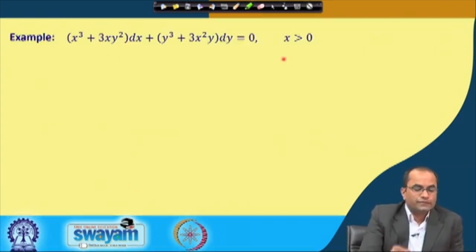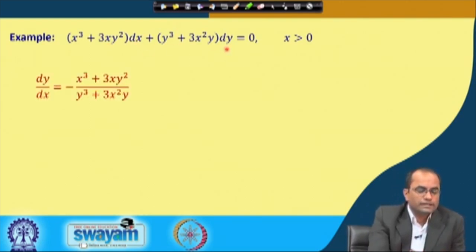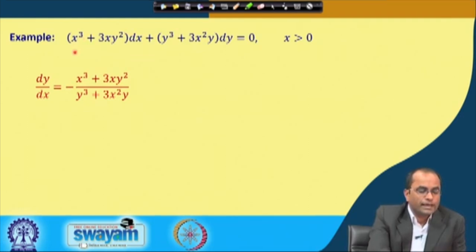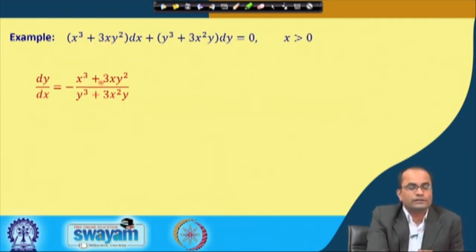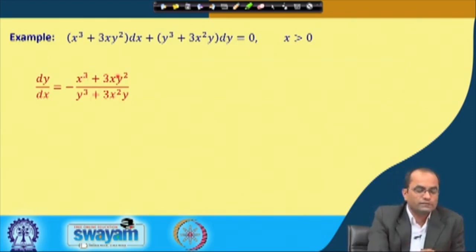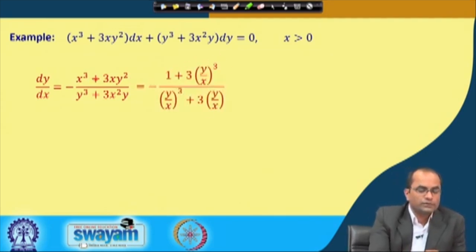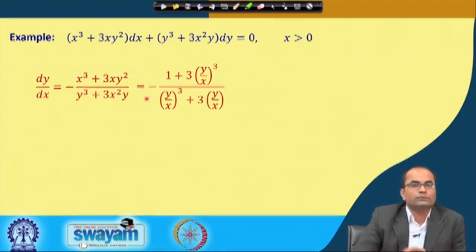We go through this example of a homogeneous differential equation. Rewriting it in dy/dx form by dividing, we get dy/dx = −(x³ + 3xy²) / (y³ + 3x²y). We can now see that this can be put into y/x form because all terms have degree 3: x³ is degree 3, xy² is 1+2=3, y³ is degree 3, and x²y is 2+1=3.